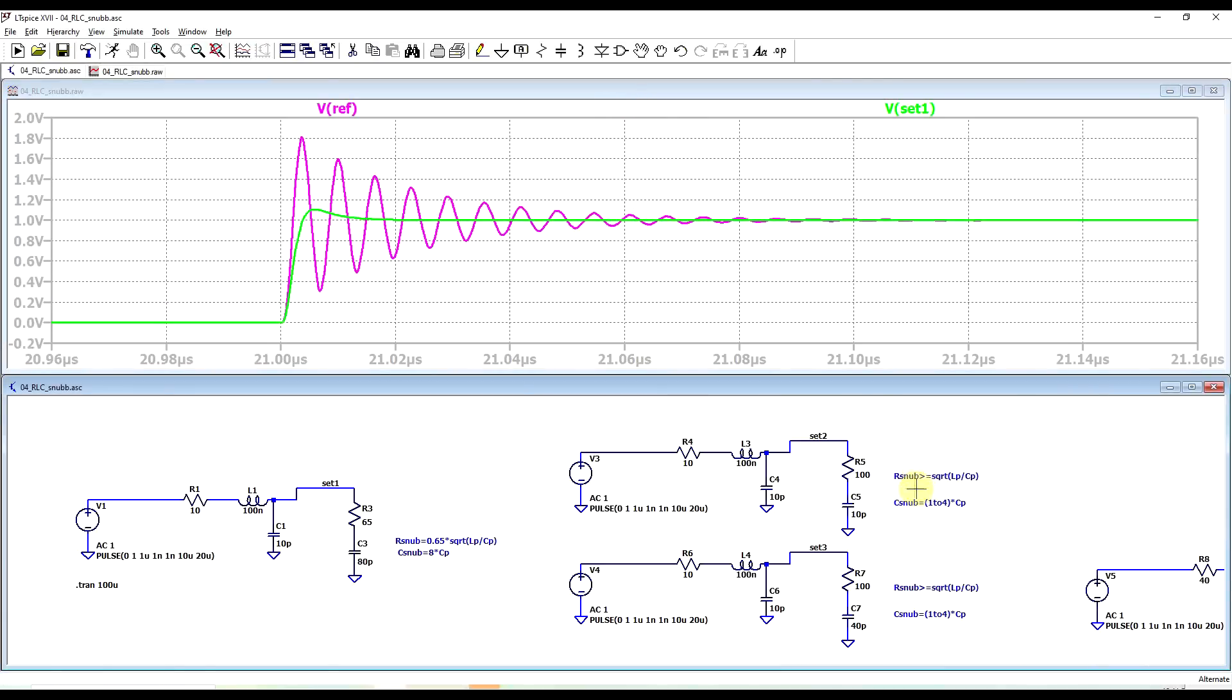And then the other set of values uses a snubber resistor which is larger than or equal to the square root of the parasitic inductance divided by the parasitic capacitance. I use the equal value, and then the snubber capacitor is somewhere between 1 to 4 times the parasitic capacitance.